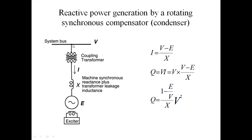First, I will explain this circuit. V is the voltage in the transmission line — this is the system bus voltage. A coupling transformer is connected in a shunt manner. This is the single line diagram of STATCOM. This is the coupling transformer, and here current is flowing through this STATCOM circuit. X is the reactance — synchronous machine reactance plus transformer leakage inductance.